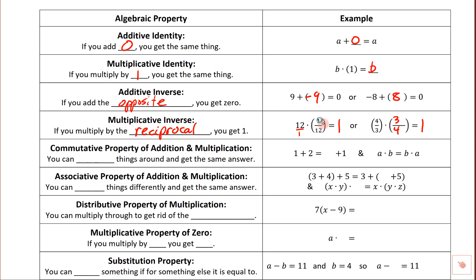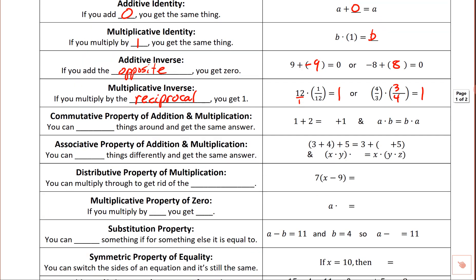This is a good time to remind yourself — when you say 'cancel,' be more specific. Say they cancel to be zero, or they cancel to be one. If we're talking about additive inverses, they cancel to be zero. If we're talking about multiplicative inverses, then they cancel off to be one.